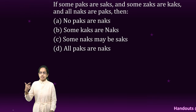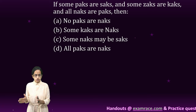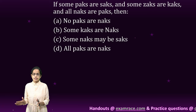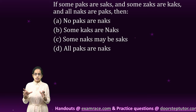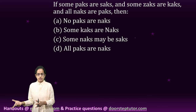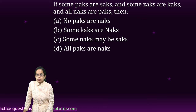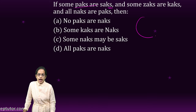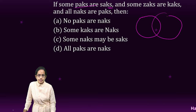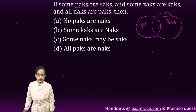The next question is a simple Euler diagram question — not a syllogism problem. You can refer to the class on Euler diagrams covered separately. The question says: some packs are sacs, so I draw circles for pack and sac with an intersection. Some sacs are cacs, so I draw another circle. All knacks are packs.